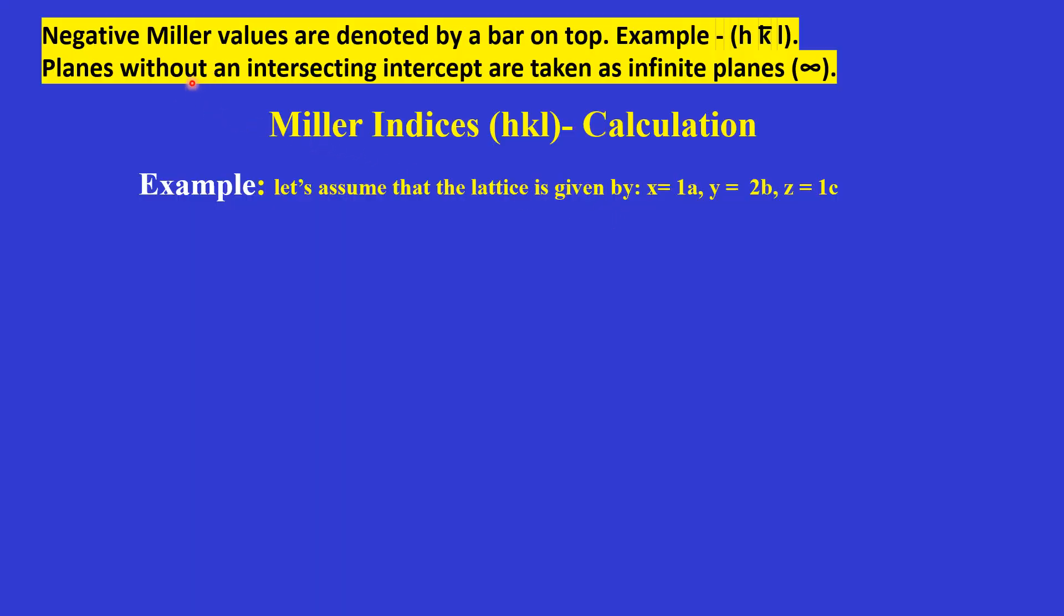Negative Miller indices are denoted by a bar on top of the indices. Suppose we have h, k, l, and k has some negative value, so we will write h, k-bar, l. Planes without an intercept on any axis are taken as infinite planes.